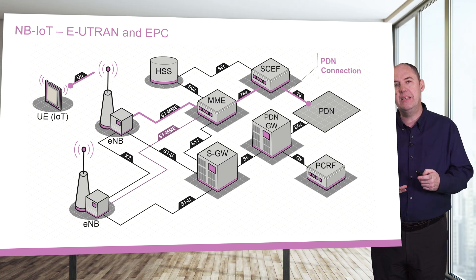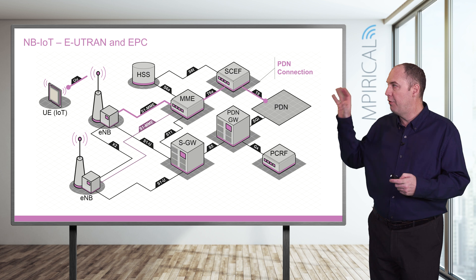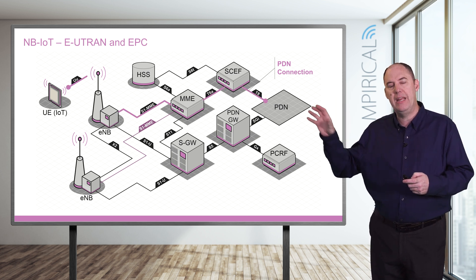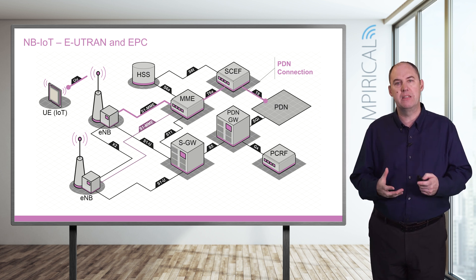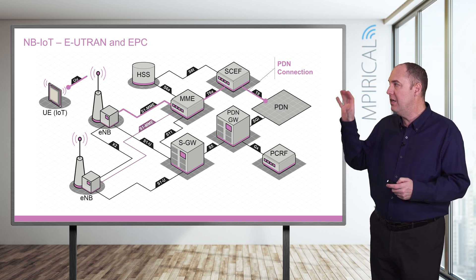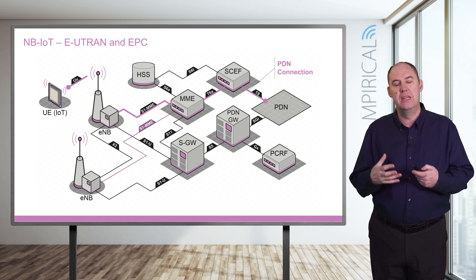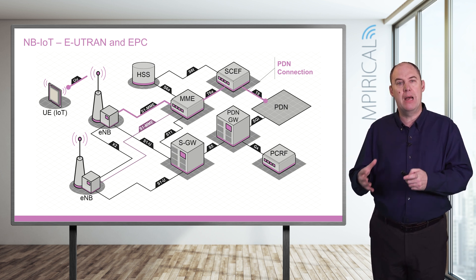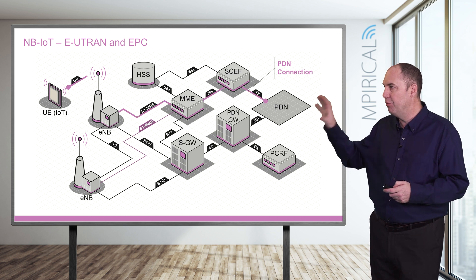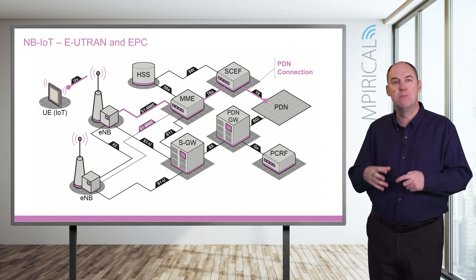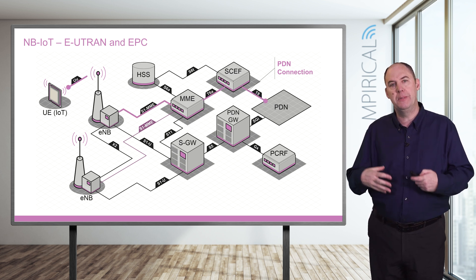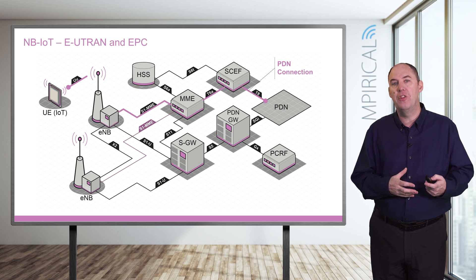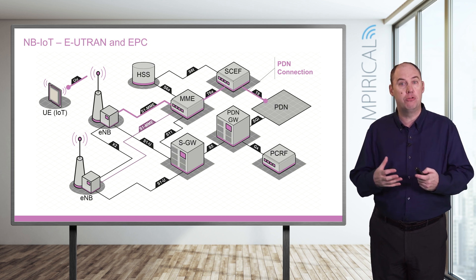With the SCEF, you can send non-IP data — referred to as NIDD — through the SCEF down to the eNodeB and across the air interface, and vice versa. So we have different ways of delivering data to that particular device. The idea of this route is it's more optimized because it embeds a little bit of data onto the signaling, onto the control plane.